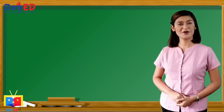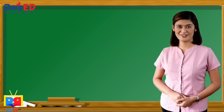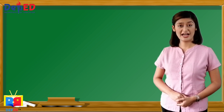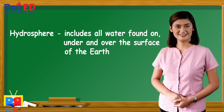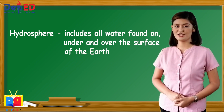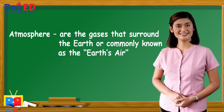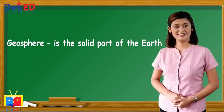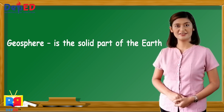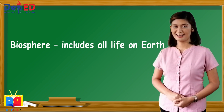Those are the four subsystems of the Earth. Let's have a brief recap: The hydrosphere includes all water found on, under, and over the surface of the Earth. The atmosphere refers to the gases that surround the Earth, commonly known as the Earth's air. The geosphere is the solid Earth. And the biosphere includes all the life on Earth.